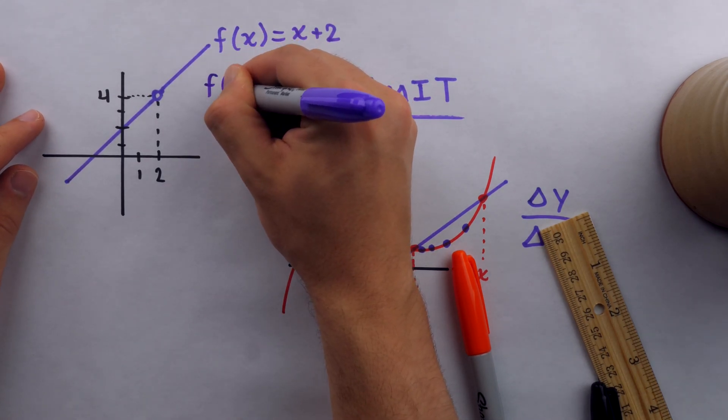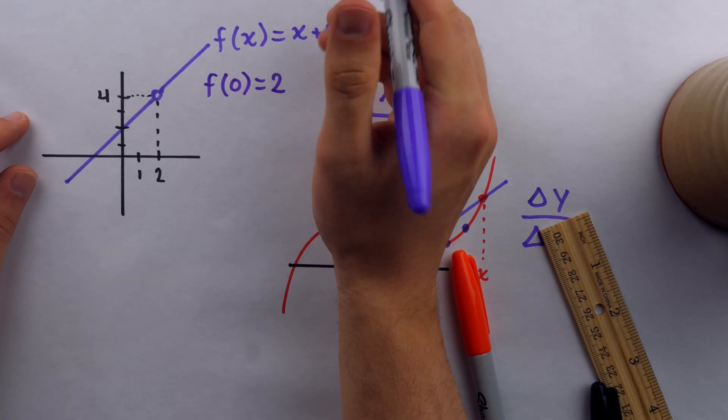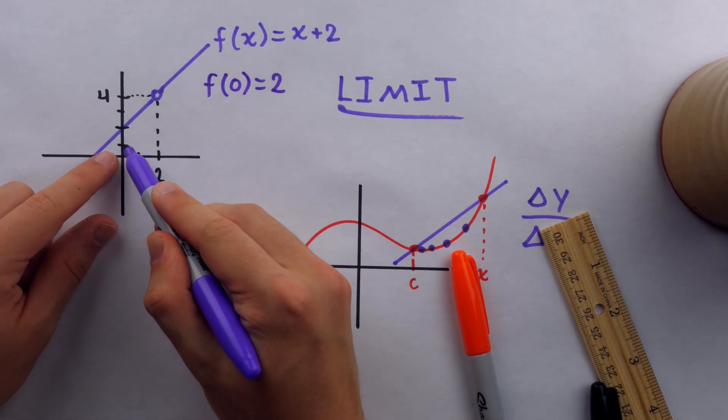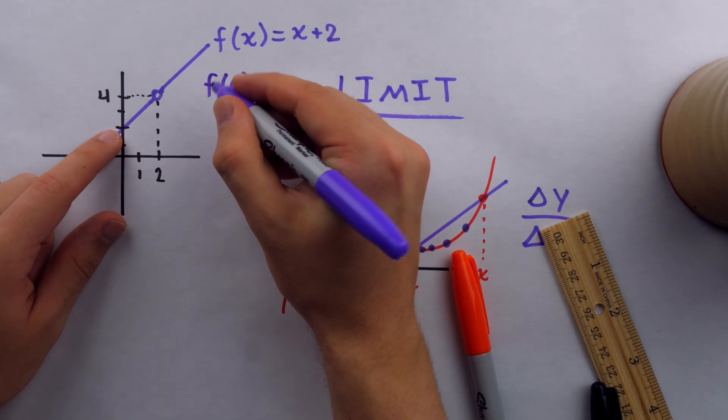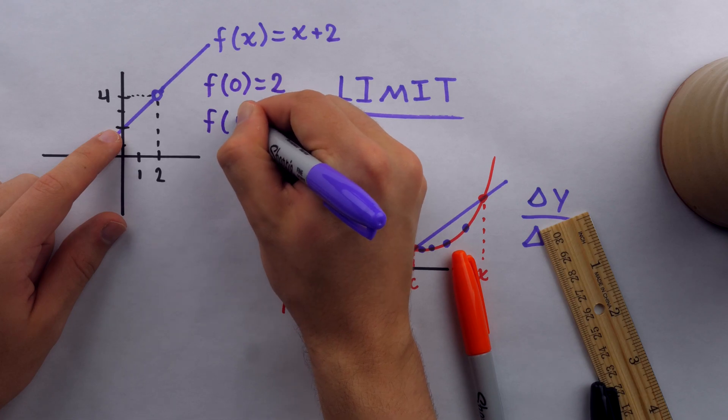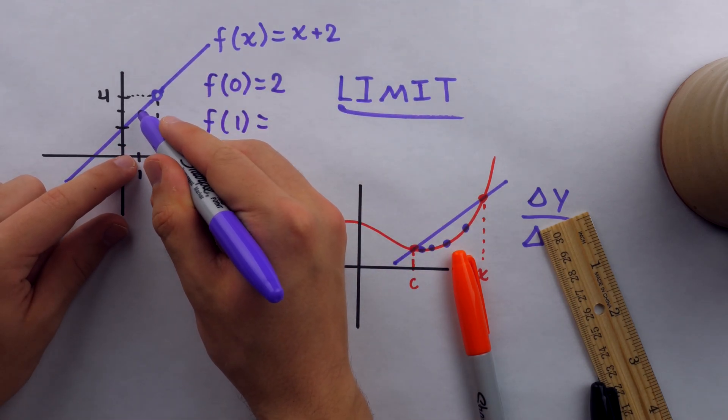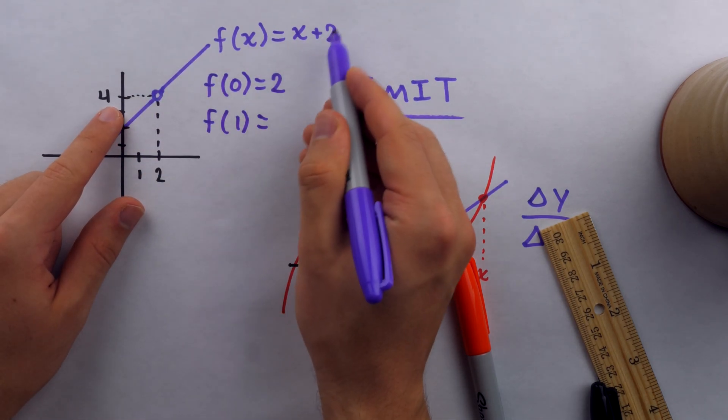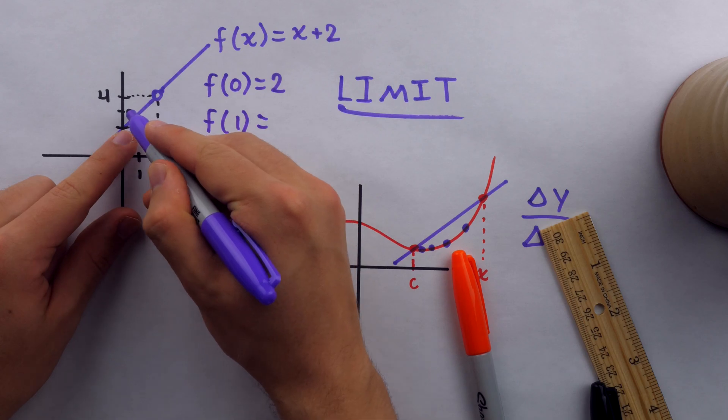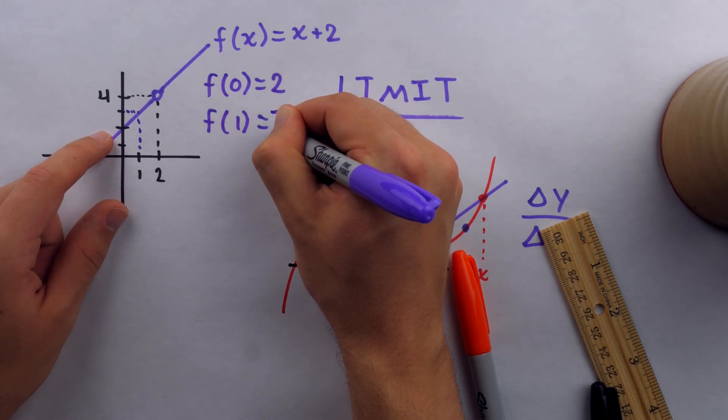And now there are many values of this function I could list. For example, I could write that f of 0 is equal to 2. If we look at where x equals 0, the value of the function there, the y coordinate, is 2. Similarly, I could consider f of 1. I could write that f of 1 is equal to, well I can't see it exactly on the graph, I can't be sure because it's a sketch, but assuming this equation is correct, f of 1 would be 3, and that looks about right. f of 1 is 3.